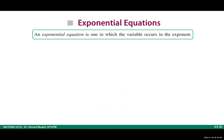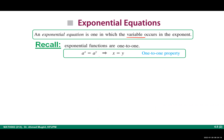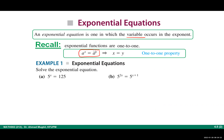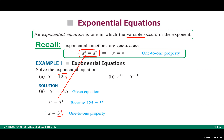The exponential equation is the equation that has a variable in the exponent. To solve it, you need to use the one-to-one property. For instance, here you have 5 to the power x. You need to have an exponential expression with base 5 on the other side. You know that 125 is 5 to the power 3, so you can apply this property directly, which implies that x equals 3. This is the solution of the equation.